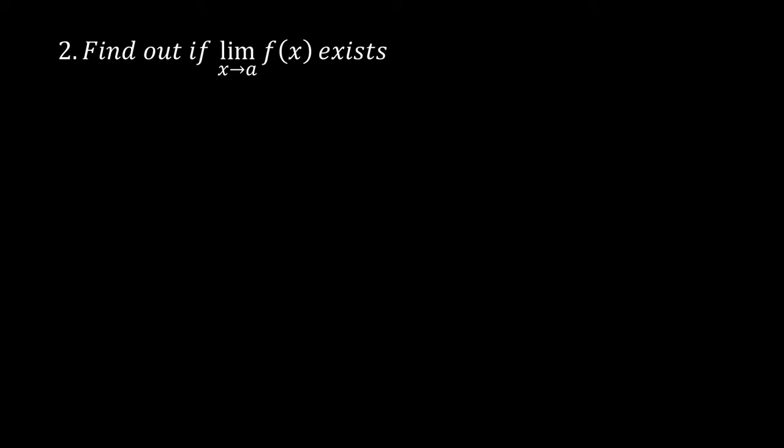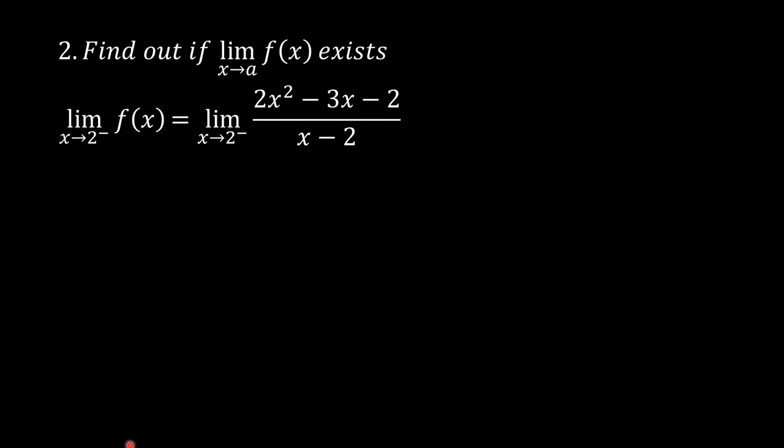Step 2: Find out if the limit of f of x as x approaches a exists. We are going to find out whether the limit of f of x as x approaches 2 exists. Solve for the limit of f of x as x approaches 2 from the left, and then solve for the limit of f of x as x approaches 2 from the right. The limit of f of x as x approaches 2 from the left equals the limit of 2x squared minus 3x minus 2, divided by x minus 2, as x approaches 2 from the left.